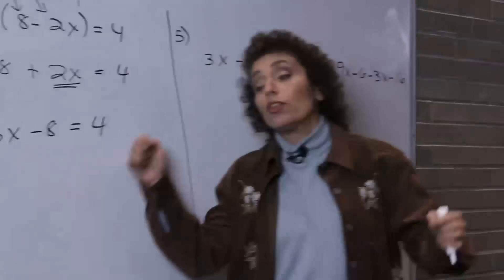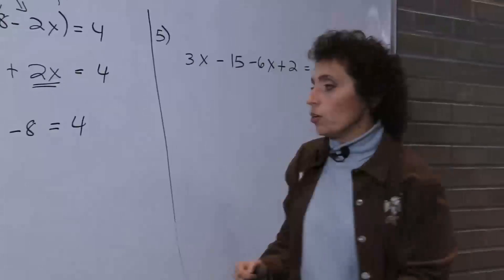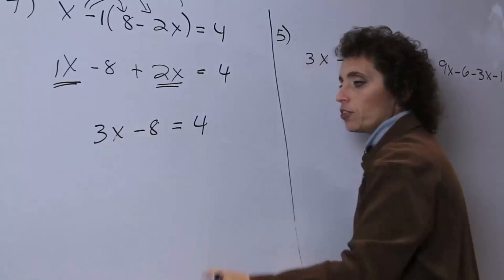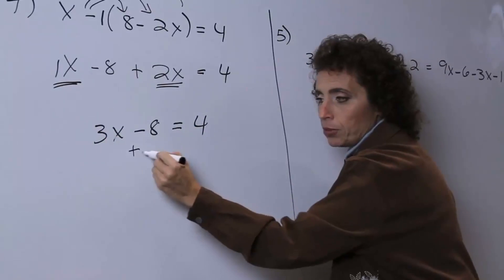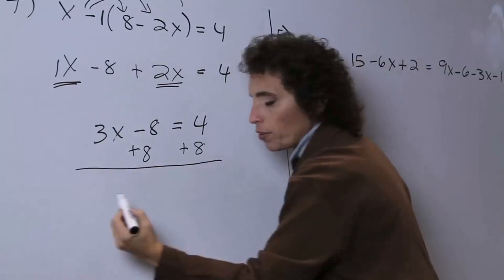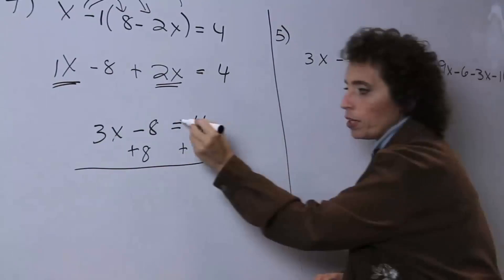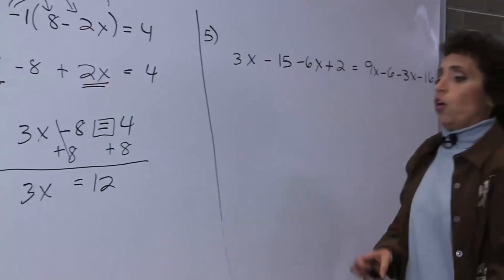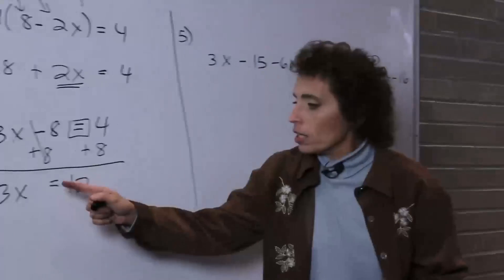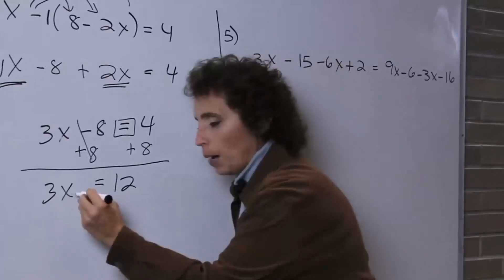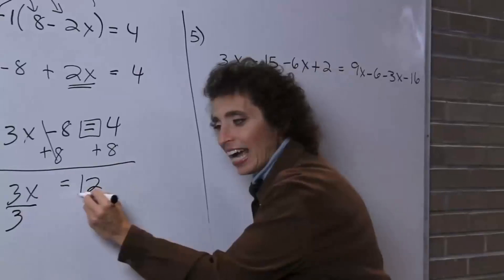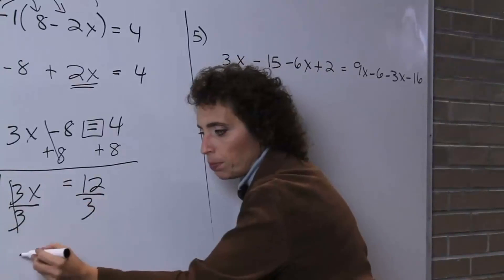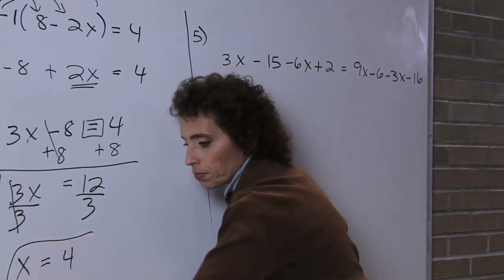Now I go back to the left side and collect like terms. This x is 1x, so I have 1x and also 2x — they're like terms because they have the same variable factor. So 1x plus 2x is 3x, minus 8 equals 4. Now I add 8 to both sides: 3x equals 12. I need this coefficient to be a 1, so I divide by 3. That gives x equals 4.